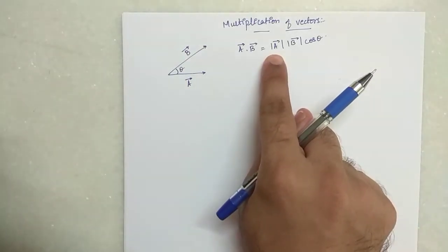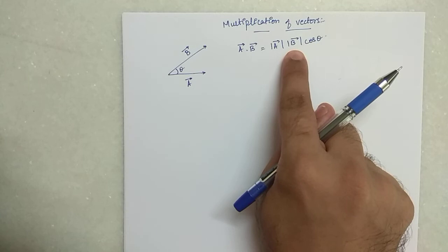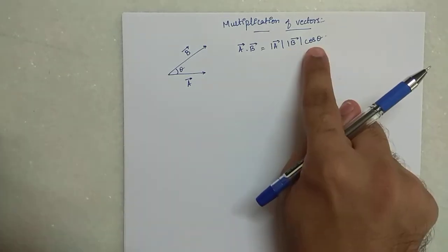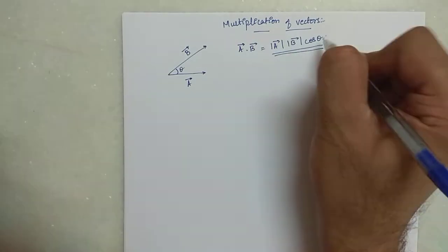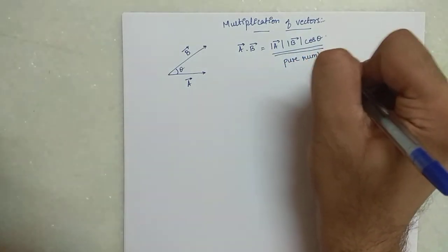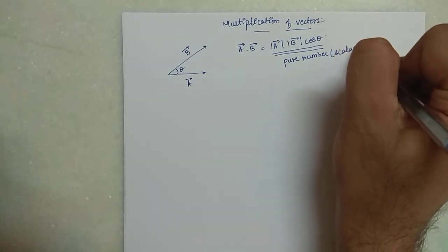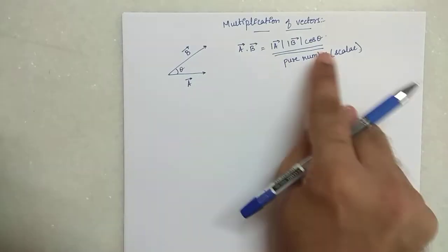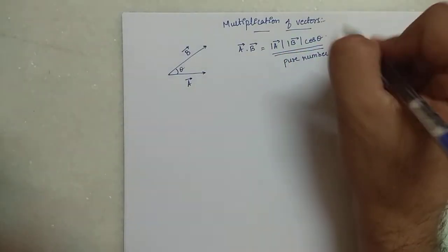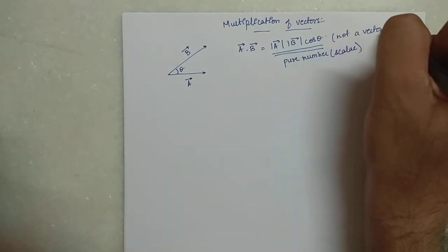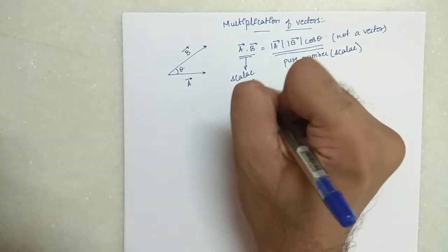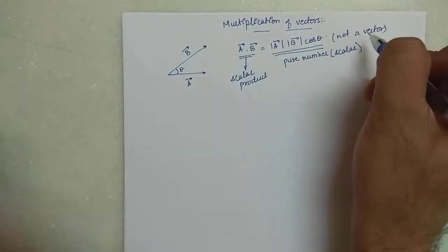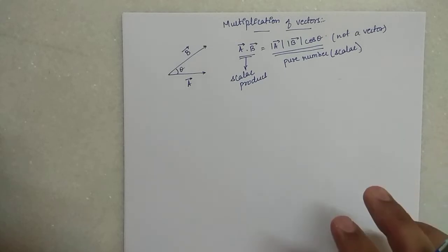On the right hand side, this is magnitude — magnitude means it is just a number, a scalar quantity. This is also a magnitude, which means this is also a scalar quantity. And cos theta is also a number. So the right hand side is just a pure number — a scalar quantity. That is, a dot b will always give you a scalar quantity; it will not give you a vector. That is why this product is also called scalar product, because when you do scalar product of two vectors, what you get is a scalar quantity.